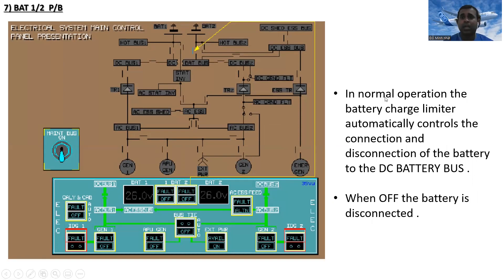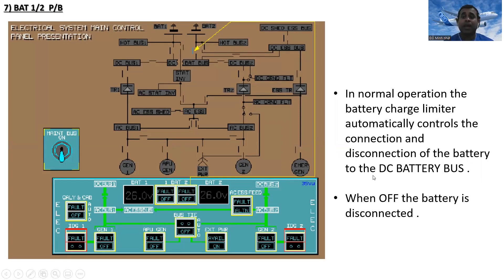The battery 1 or 2 push buttons: in normal operation, the battery charge limiter automatically controls the connection and disconnection of the battery to the DC battery bus. When set to off, the battery is disconnected. You can also see the battery voltage displayed here.